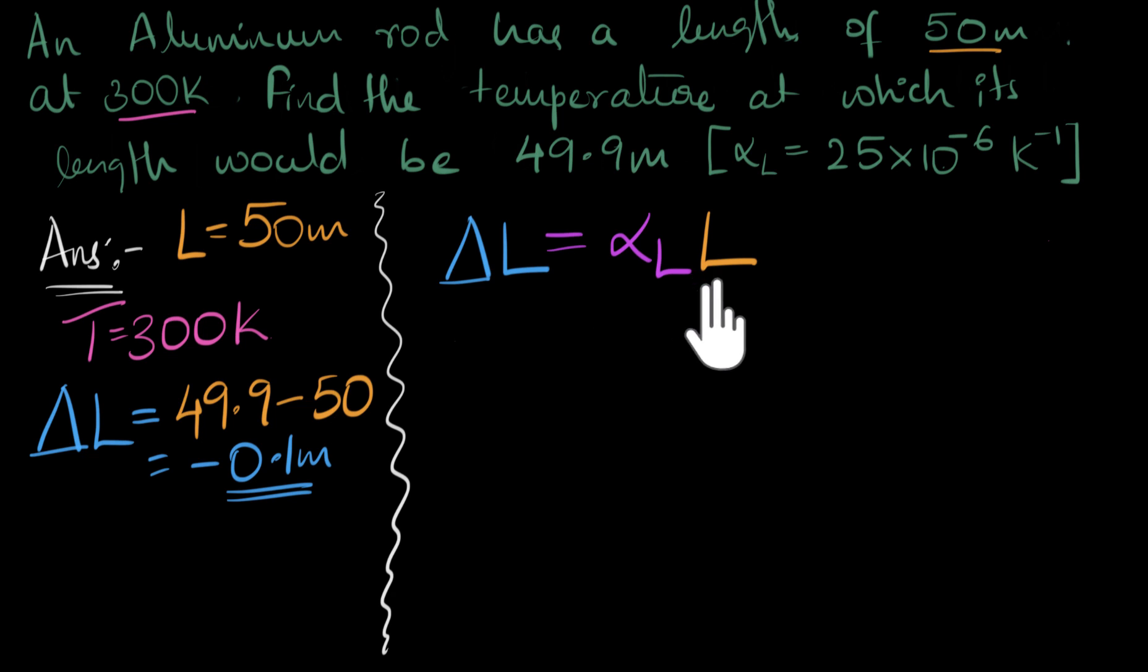But this would be for one Kelvin rise. What would happen if we had two Kelvin rise? Oh, this whole thing would be doubled. What if we had three Kelvin rise? Tripled. What if we have delta T Kelvin rise? Ooh, in that case, we would just have to multiply this by delta T.